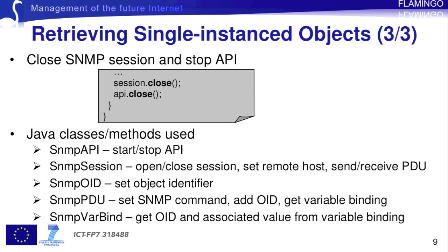Here is a summary of the classes and methods we have used for retrieving single-instance objects. From the SNMP API class, we used methods to start and stop an API. We used the SNMP session to open and close the session, to set the remote host and send and receive a PDU. The SNMP OID to set the object identifier. The SNMP PDU to set the SNMP command and the object identifier and get the variable binding. And lastly, the SNMPVarBind to get the object identifier and the associated value from the variable binding.